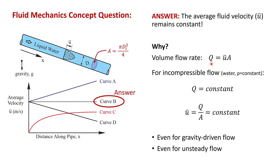We learned in chapter 3 that the volume flow rate, in cubic meters per second, is the average velocity times the cross-sectional area of the pipe. For this problem, we have liquid water, so we have an incompressible flow. For an incompressible flow, the volume flow rate is a constant. So at any cross-section of the pipe, we have the same volume flow rate — the same number of cubic meters per second passing any section.